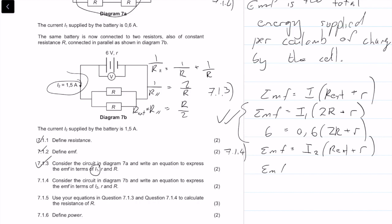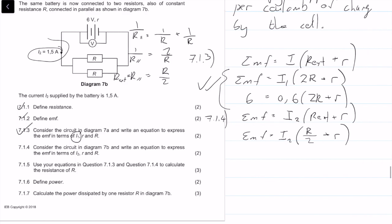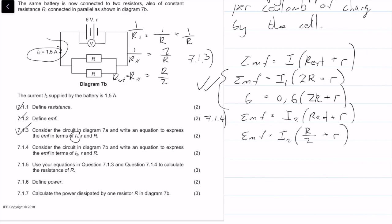So we can say that the emf is equal to i2, the r external we know is r over 2 plus small r. That's a perfectly acceptable answer, but if we wanted to, we can say that 6 equals 1.5 times (r over 2 plus r). Both answers are perfectly correct.